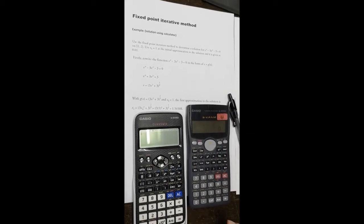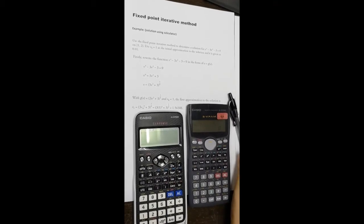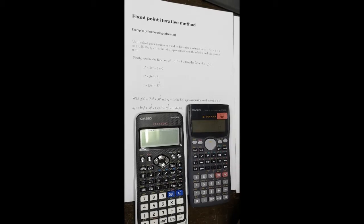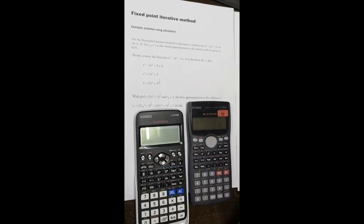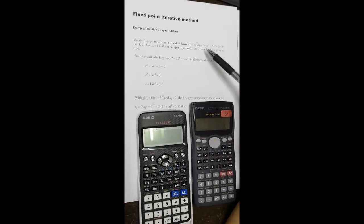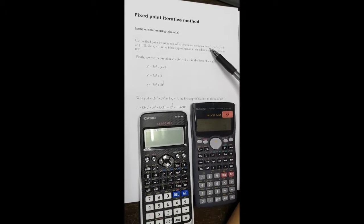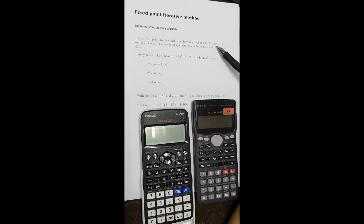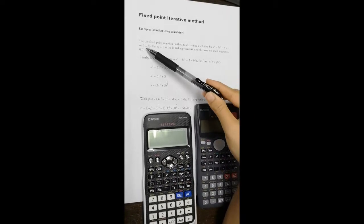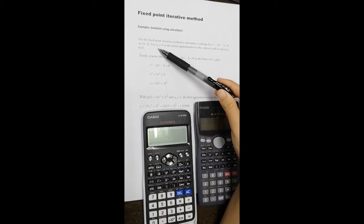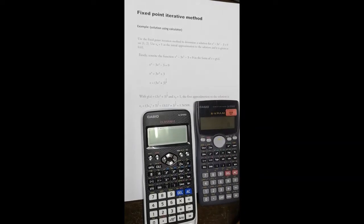Hi everyone, for this video we are going to see how to use a calculator to find the solution by using fixed-point iterative method. Based on the example given, we are going to determine the solution for x^4 - 3x^2 - 3 = 0 on interval [1,2] using initial value equal to 1.